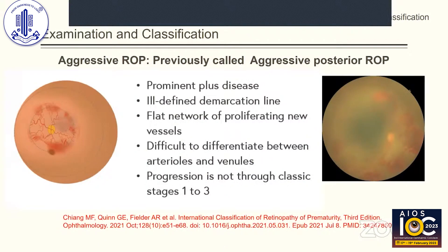Aggressive ROP, previously called aggressive posterior ROP, was thought to be mainly localized in the posterior segment. It is now understood that aggressive ROP can be seen in any zone. It is characterized by prominent plus disease, an ill-defined demarcation line, and flat networks of proliferating new vessels.